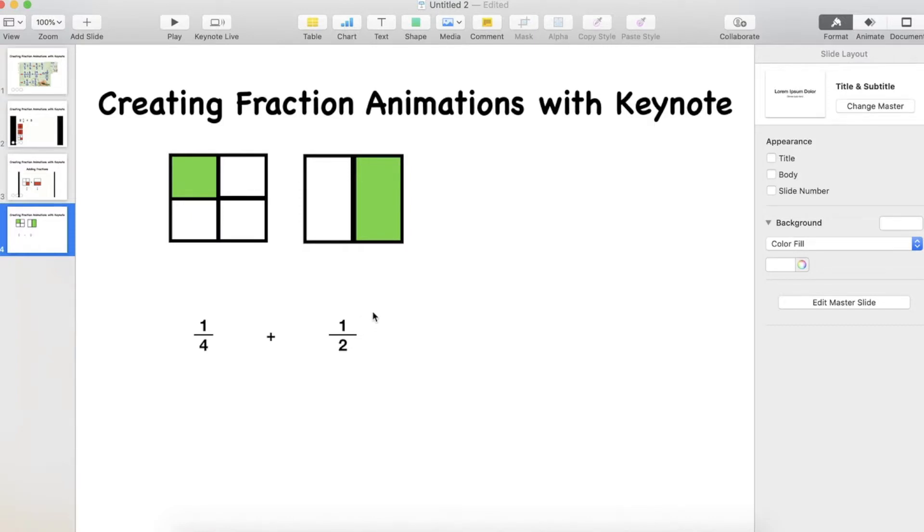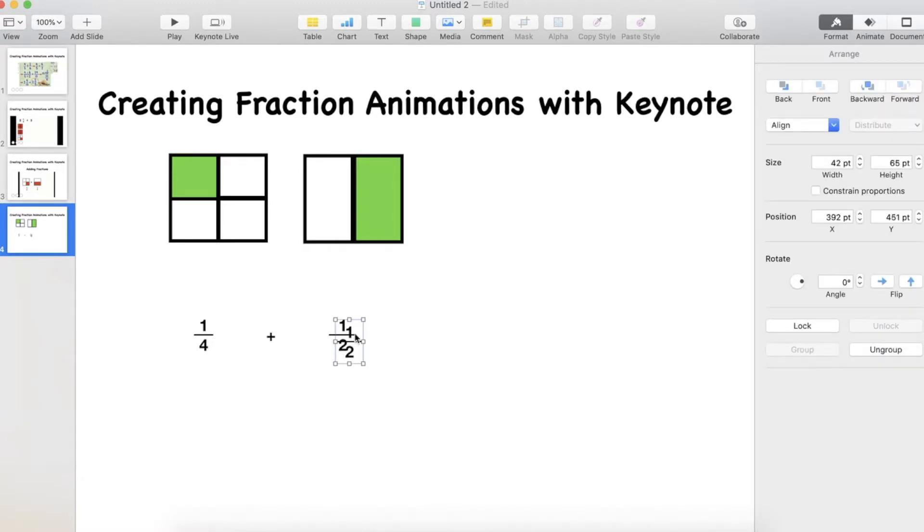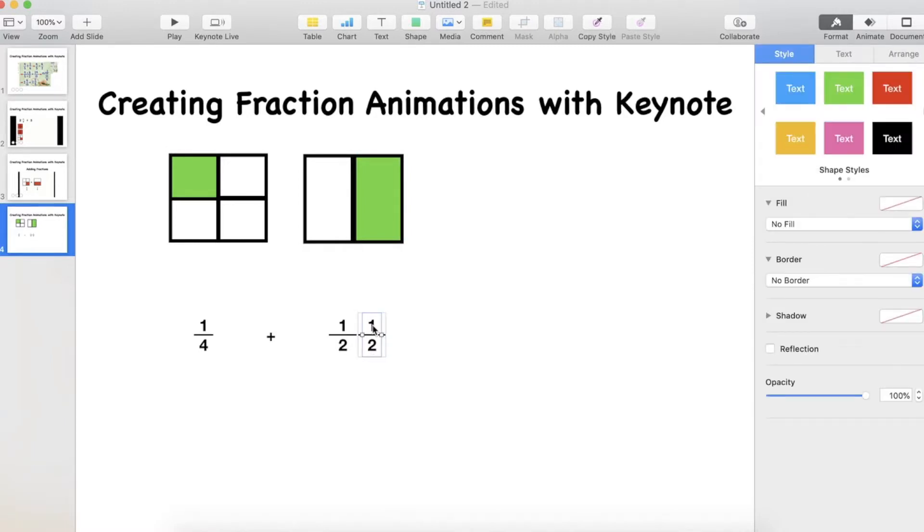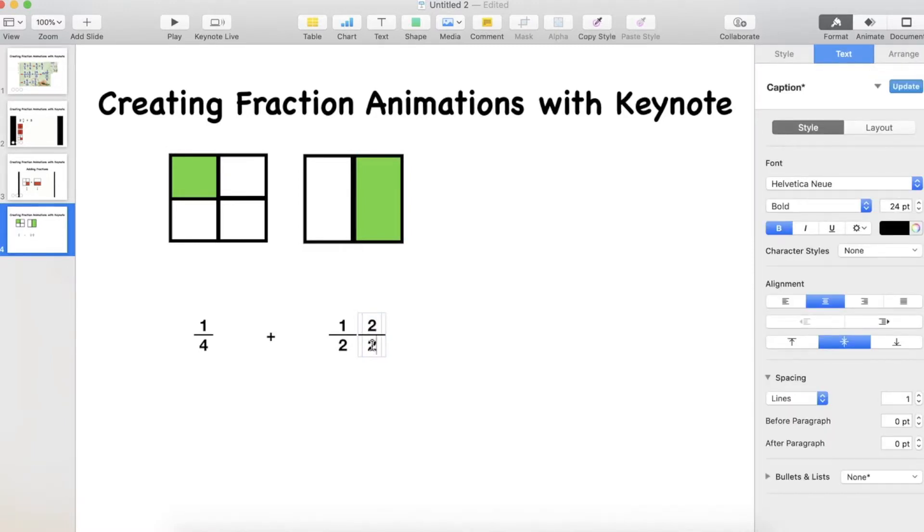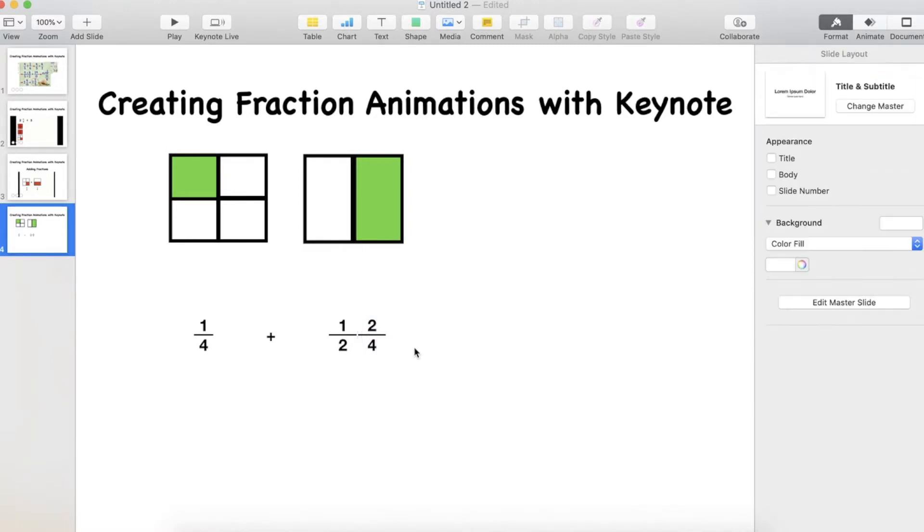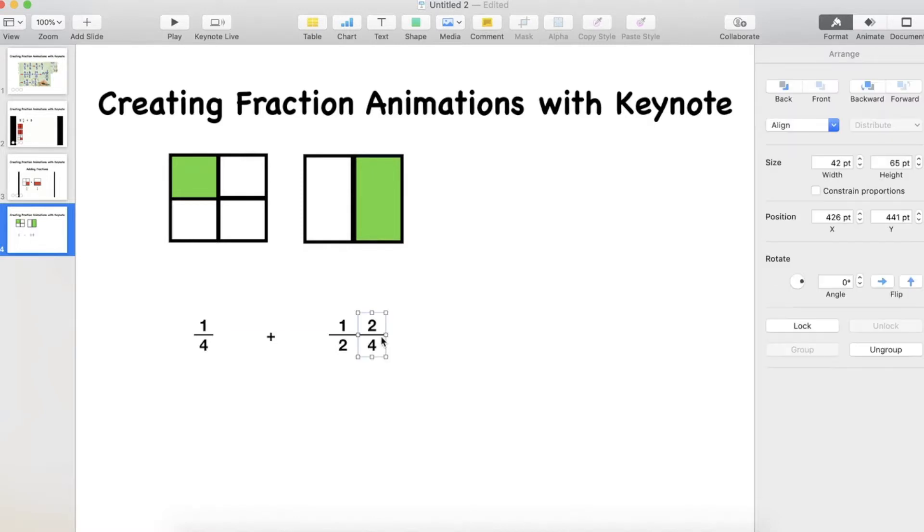Now the first thing we need to do when we're adding fractions, we can't add fractions with different denominators obviously. So we need to make a new fraction. This one, one half, is the same as two quarters. I'm going to put this one over the top because this is when we start now using our animations.